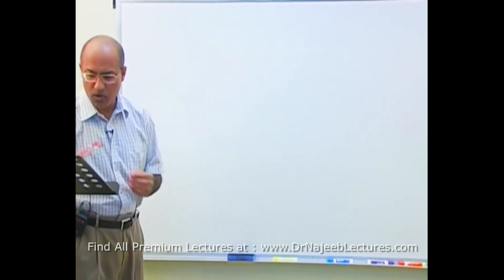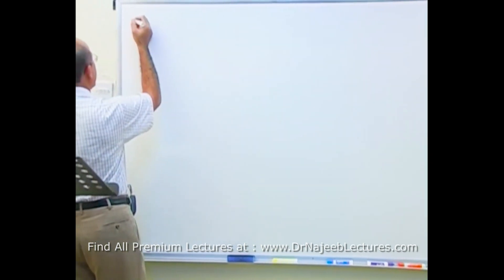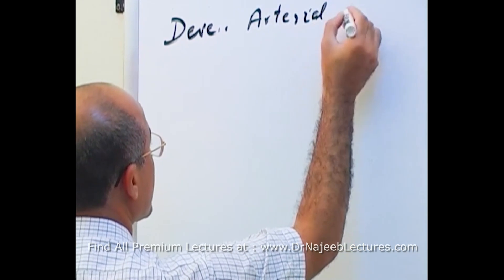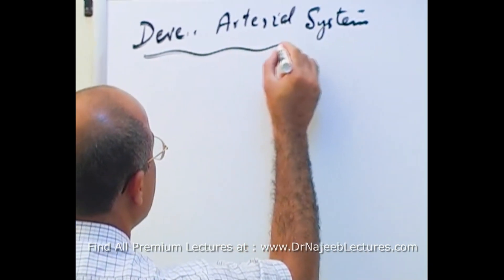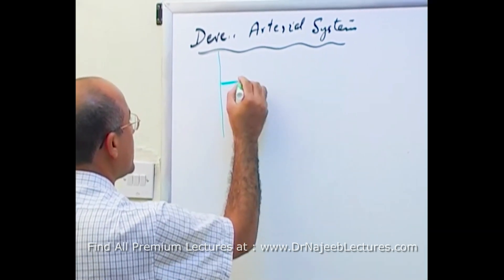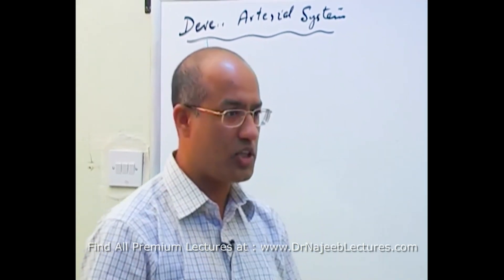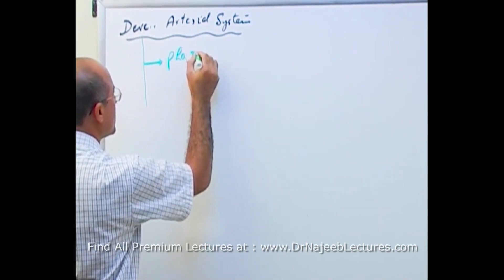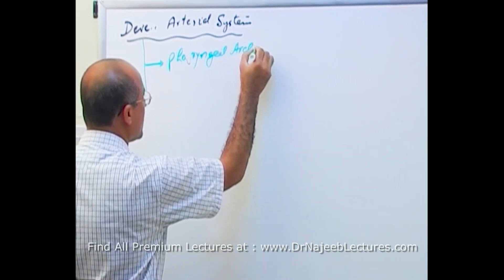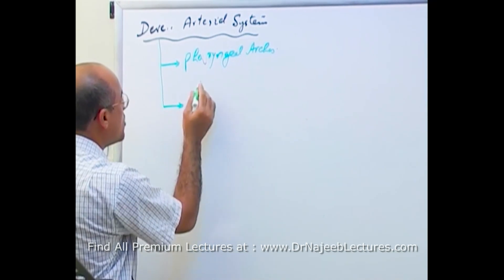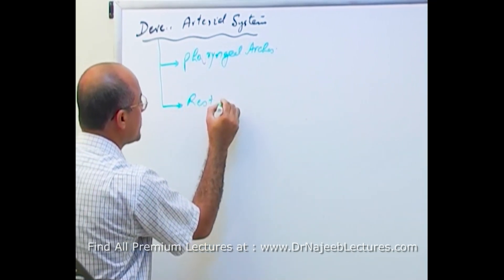We'll talk about the development of the arterial system under two headings. Number one: the arterial system developing from pharyngeal arches — I will explain what that is. Number two: the development of the vascular system in the rest of the body.